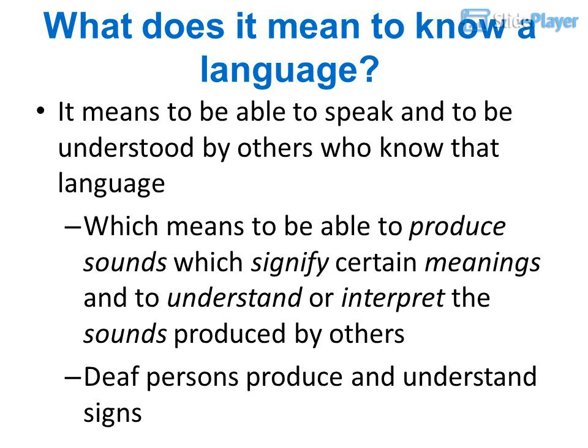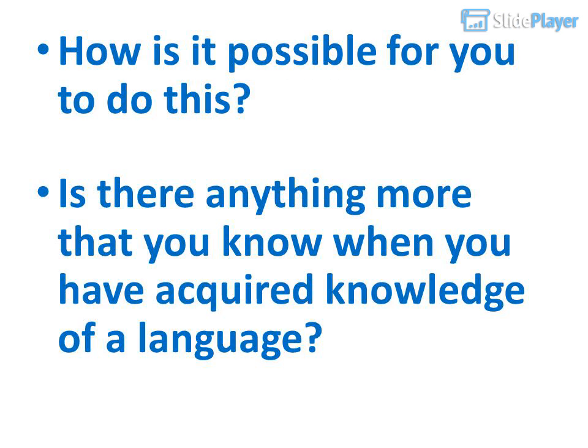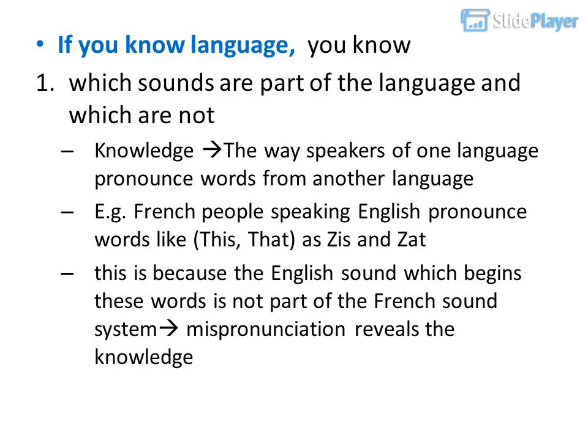What does it mean to know a language? It means to be able to speak and to be understood by others who know that language — to be able to produce sounds which signify certain meanings, and to understand or interpret the sounds produced by others. Deaf persons produce and understand signs. If you know a language, you know which sounds are part of the language and which are not.